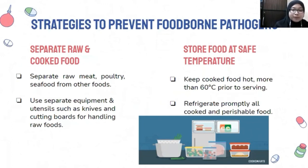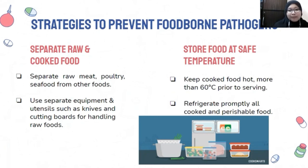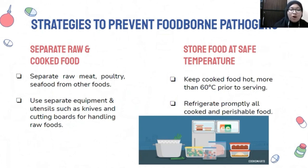I will present strategies to prevent foodborne pathogens. First, store and handle raw and cooked food separately — separate raw meat, poultry, and seafood from other foods, and use separate equipment and utensils such as knives and cutting boards for raw foods to prevent cross-contamination. Second, store food at safe temperatures — keep cooked food hot at above 60°C until serving, and refrigerate all cooked and perishable food. These methods can slow down or prevent the growth of microbes on food.